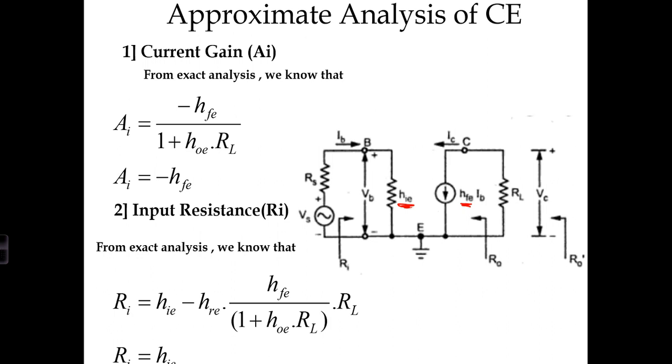First is AI, current gain. From exact analysis, we know AI equals minus HFE divided by 1 plus HOE times RL. In approximate analysis, we discard HOE. If HOE is not there, AI becomes simply minus HFE.